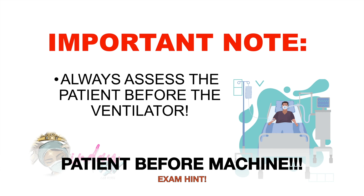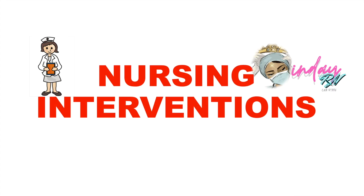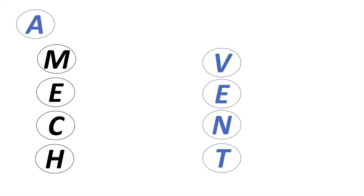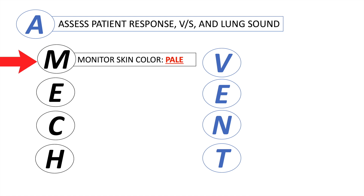Check the patient first because you can see what is really happening when you prioritize the patient. The alarms guide you on what interventions are necessary. Use the mnemonic A MECH VENT for nursing care. A: Assess the patient's response, vital signs, and lung sounds. Check the breathing pattern — the client will never breathe at a rate lower than the rate set on the ventilator. M: Monitor the patient's skin; pale lips and nail beds indicate oxygenation problems.